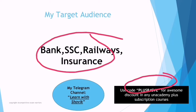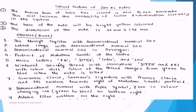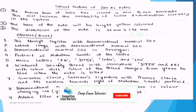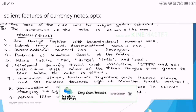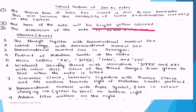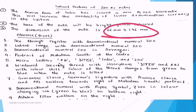Let's begin without further delay. The first note we'll discuss is the 200 rupees note. The Reserve Bank of India has issued a new 200 rupee bank note, which will increase the availability of lower denomination currency in the system. Most importantly, this note is bright yellow colored, and its dimension is 66 millimeter by 146 millimeter — very important, as dimensions have been asked in exams.